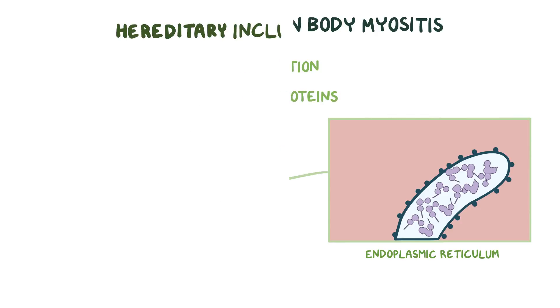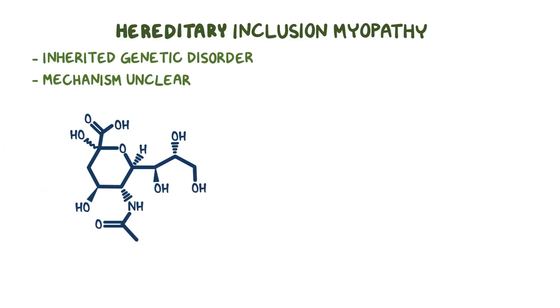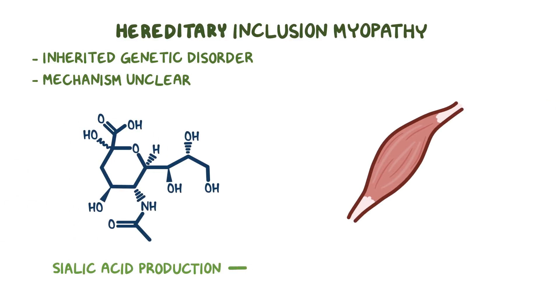By comparison, hereditary inclusion myopathy is a rare inherited genetic disorder. The exact mechanism is still unclear, but it's thought to be related to decreased sialic acid production, which plays a role in muscle function.